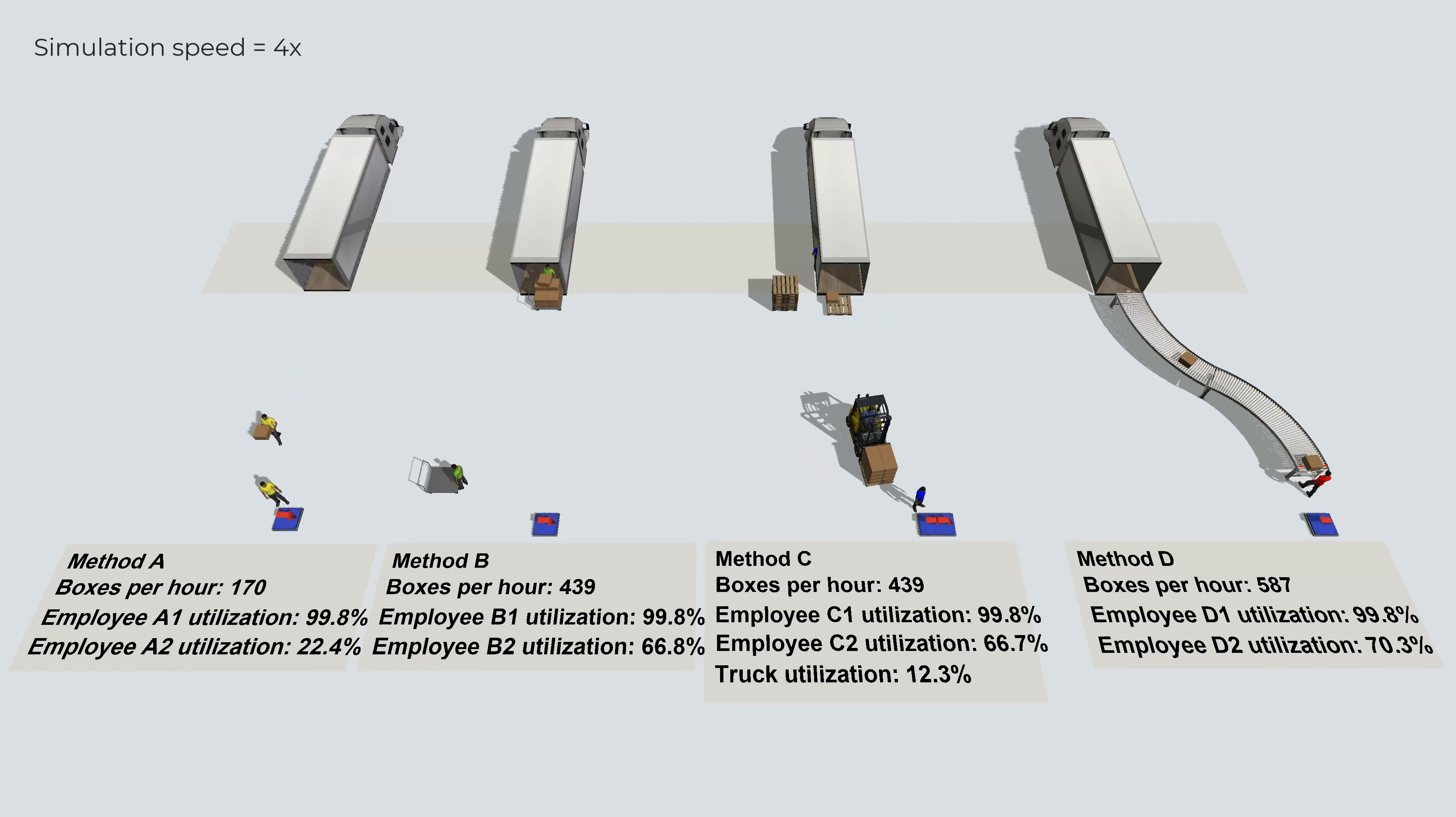And then we have method D, which processes a lot more boxes per hour than methods B and C, with the same employee utilization and without requiring the use of a lift truck. So, when it is applicable, it is clearly the best method.